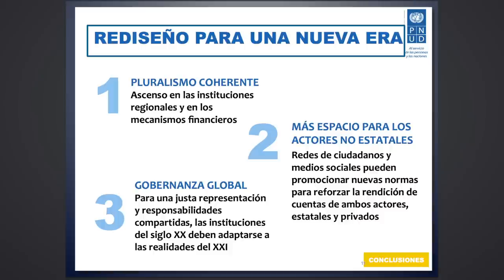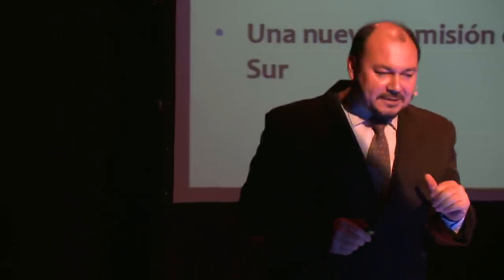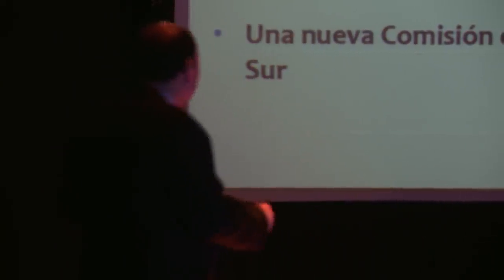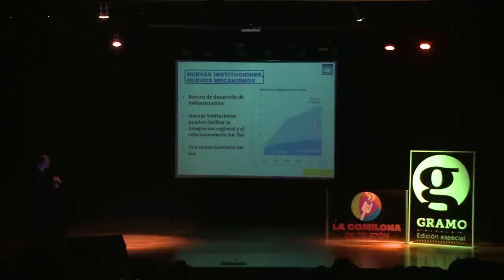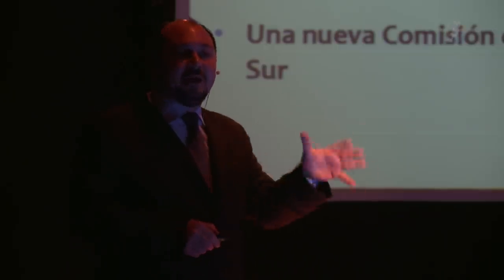Vamos a ver un gráfico que muestra por qué esto va a ir pasando. Más espacios para los actores no estatales y una gobernanza global, es decir, una justa representación y responsabilidades compartidas. Ahí vemos un gráfico que muestra que hay 10.18 trillones de dólares en las reservas mundiales, y de esas reservas mundiales, el 67% está en las economías emergentes.